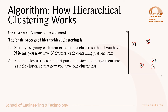The next step is to find the most similar — that is, the closest pair of clusters. Based on the distance matrix, P3 and P5 are the two closest clusters, so I will merge them into a single cluster. Now I have a total of 4 clusters, which is 1 less than 5.